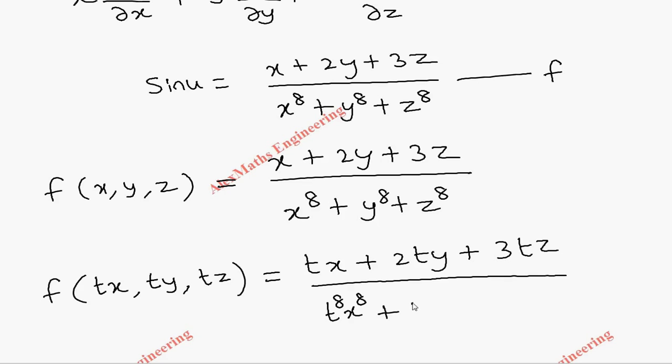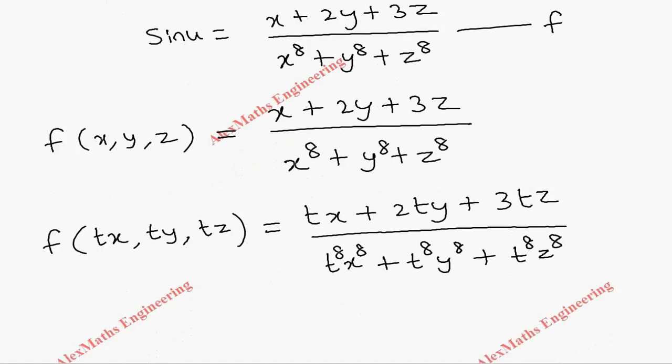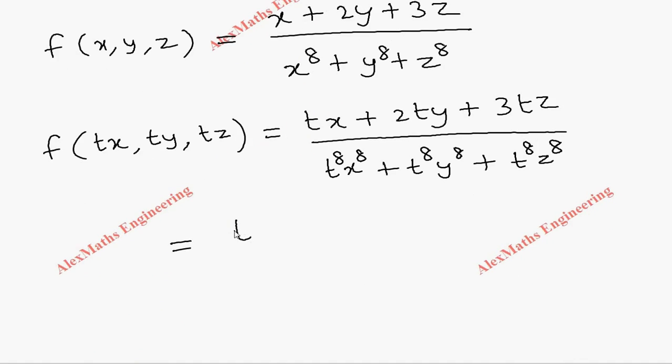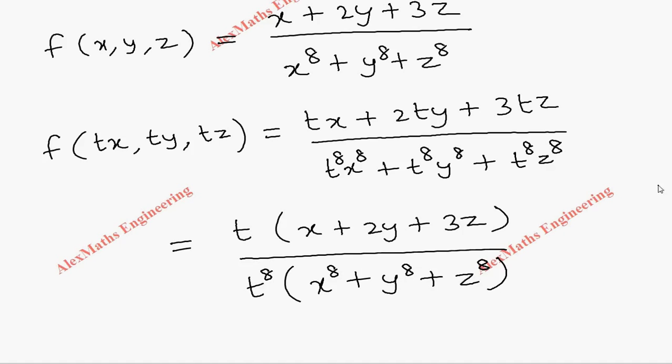So totally in the numerator and denominator we can take the common terms. In the numerator, t is common, so x plus 2y plus 3z whole divided by... in the denominator, t power 8 is common, so x power 8 plus y power 8 plus z power 8.